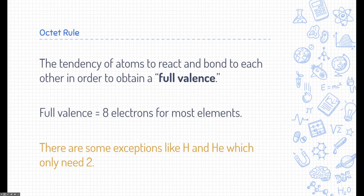All right, the octet rule is a very important rule in chemistry. This lets us know why atoms bond. Atoms bond because they want to react and bond with each other in order to obtain a full valence. This is called the octet rule. Now, a full valence, if you think about drawing Bohr models, the most any element can have on its outer shell, on its valence shell, is eight electrons. So, for most elements, a full valence is eight electrons.